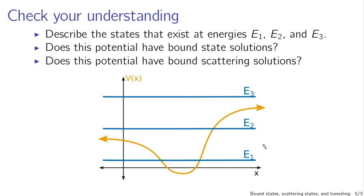To check your understanding: consider the potential shown in orange, V(x), and describe the states at particular energy levels — whether they're bound or scattering — and where you'd be likely to find the particle at a given energy level. Second question: does this potential have bound state solutions? Third question: does this potential have scattering state solutions?